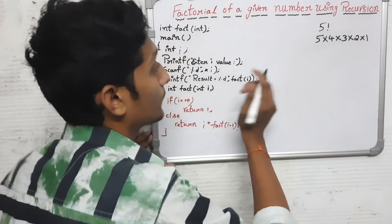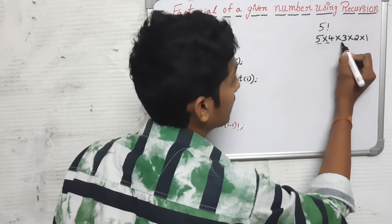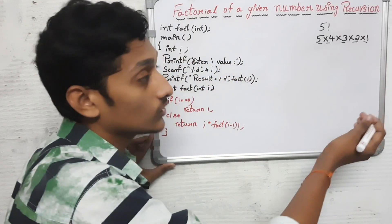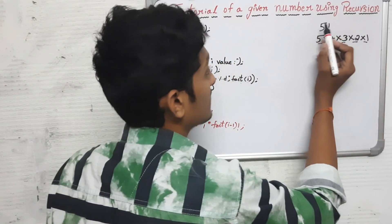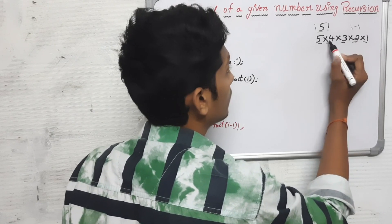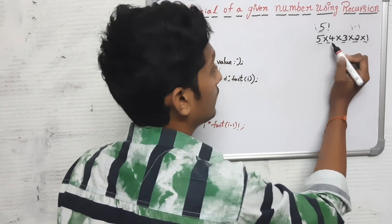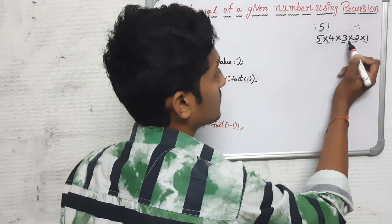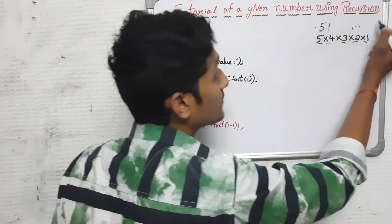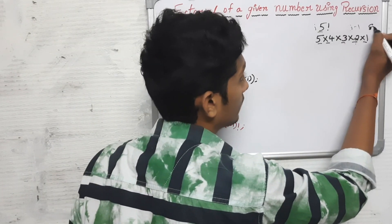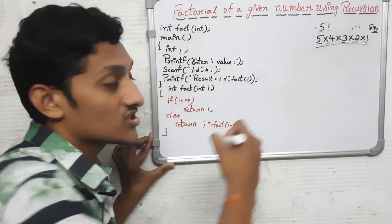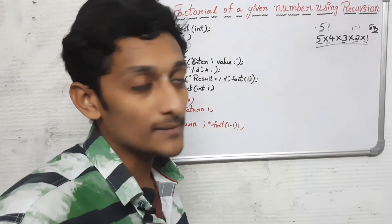If you observe this pattern, you will find the same value repeated. For example, i multiplied by (i minus 1): 5 minus 1 gives 4, 4 minus 1 gives 3, 3 minus 1 gives 2, 2 minus 1 gives 1. We stop at 0. This is the core concept we will represent programmatically.